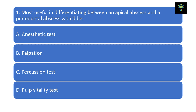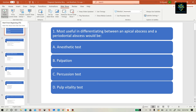But with the pulp vitality test, we can easily differentiate between apical abscess and periodontal abscess. In apical abscess, the tooth may be non-vital, but in case of periodontal abscess, it is not necessary that the tooth will be non-vital. So the answer is Option D — pulp vitality test. We will see the condition of the pulp and determine whether the pulp is vital or not.